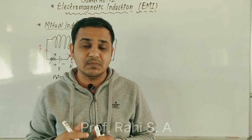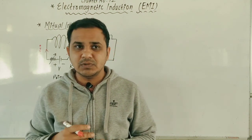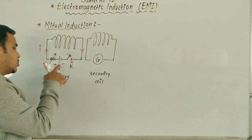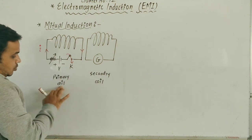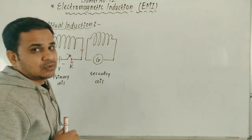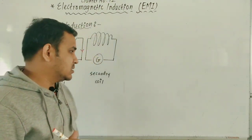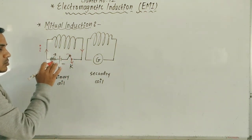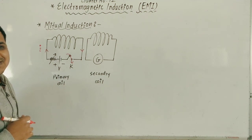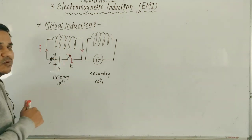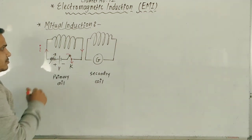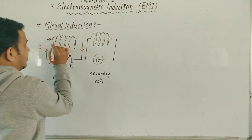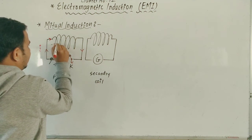Let us understand what we mean by mutual induction. To understand mutual induction, I have taken two coils — this is the primary coil and this is the secondary coil. Now see what happens: if I close the key K, then current starts flowing from positive to negative direction. This coil also has current flowing through it, and magnetic lines are generated here.